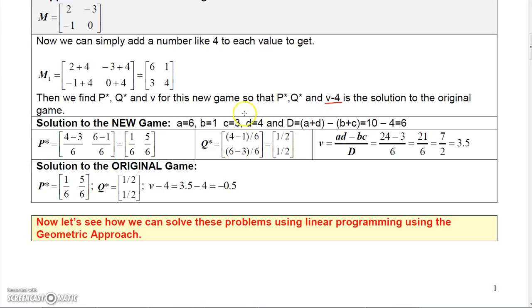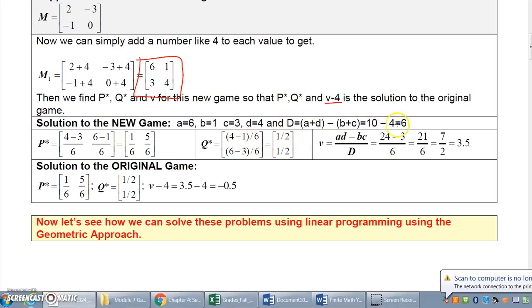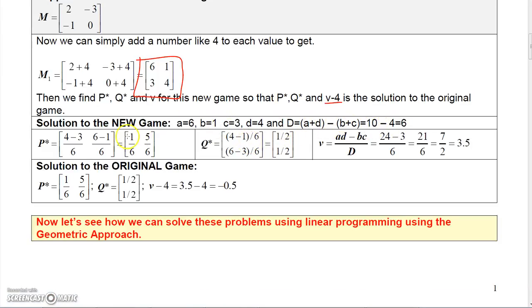We already know how to do this, so just pretend like we're doing this game, and go to your formulas from the previous section. We take D minus C over capital D. I've got capital D calculated up here, it's 6. For this game, A is 6, B is 1, C is 3, D is 4, and then you can calculate capital D, A plus D minus B plus C, and get 6.